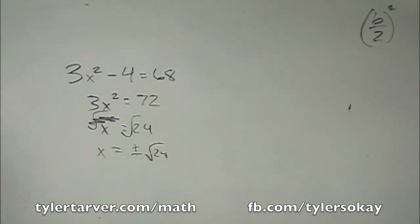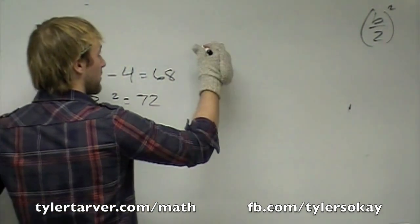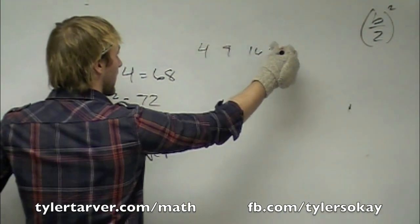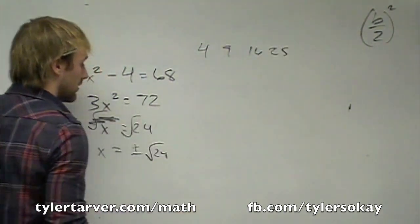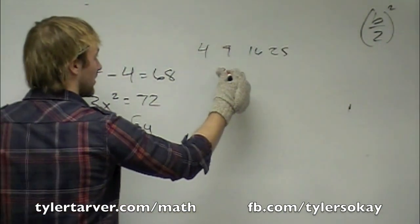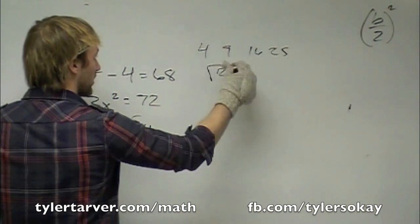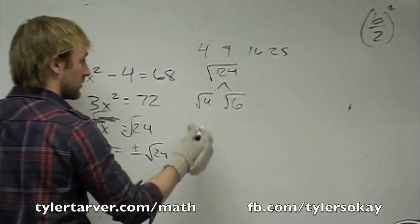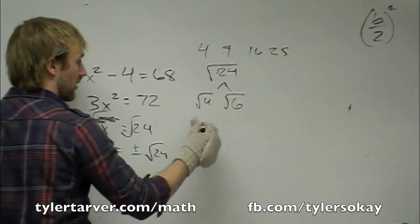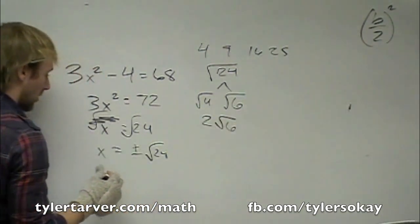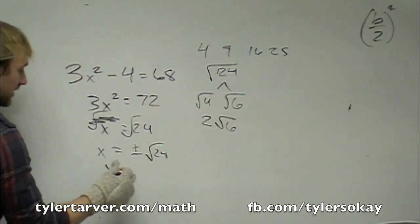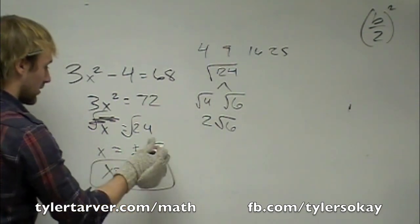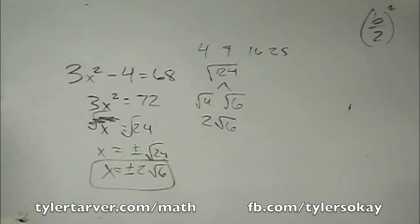Can we reduce radical 24? Is there any of the main perfect square factors that go into it — 4, 9, 16, 25? Yeah, 4 goes into it. So radical 24 you can split up into radical 4 times radical 6. What's radical 4? 2. So our answer is x equals plus or minus 2 radical 6. And you're done.